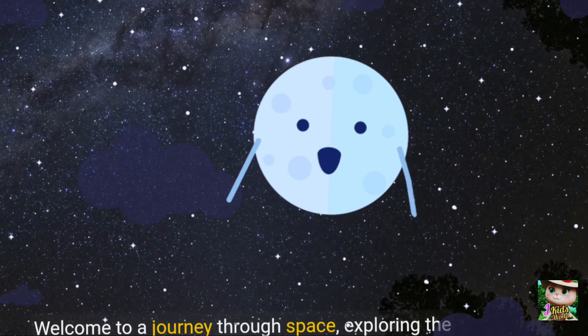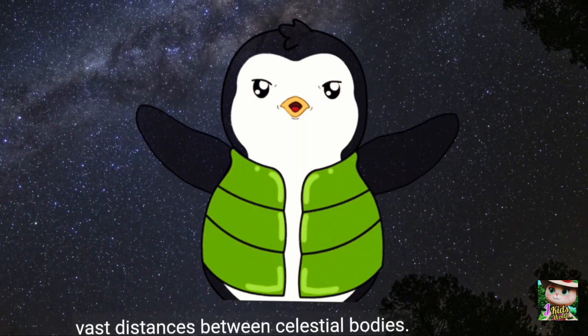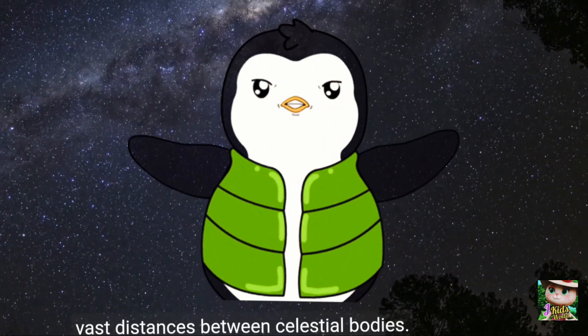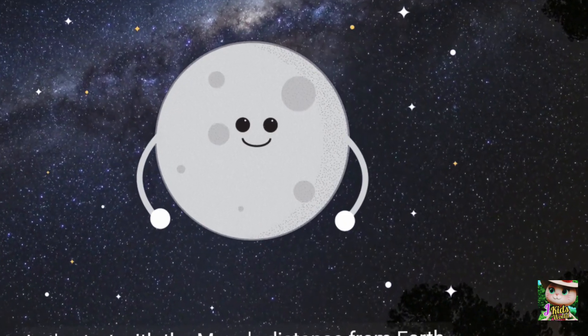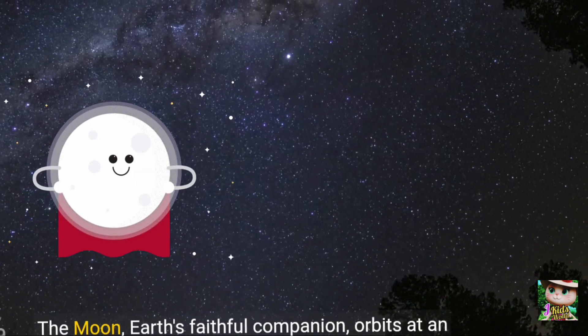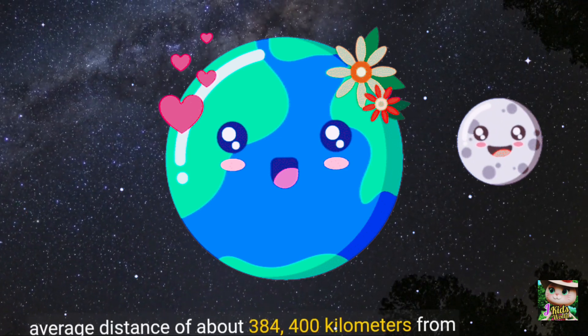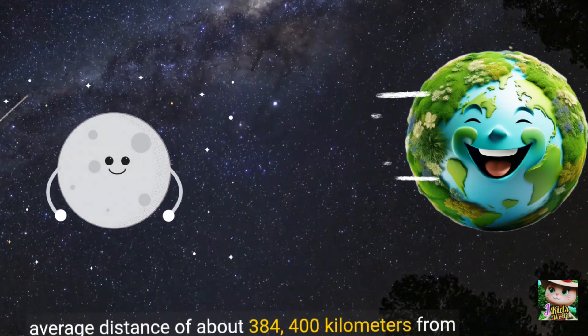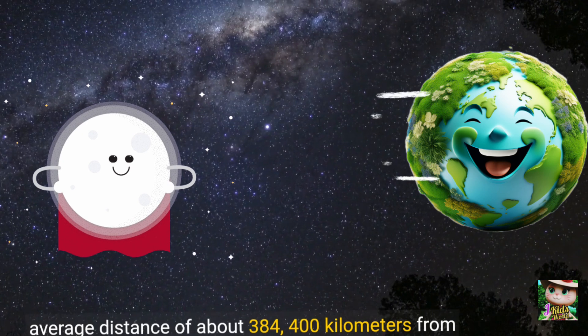Welcome to a journey through space, exploring the vast distances between celestial bodies. Let's start with the moon's distance from Earth. The moon, Earth's faithful companion, orbits at an average distance of about 384,400 kilometers from our planet.